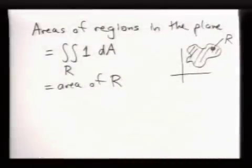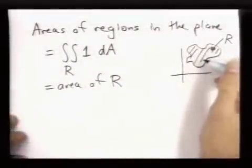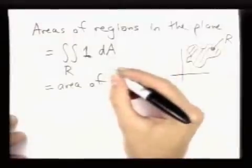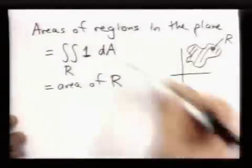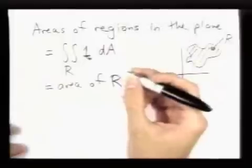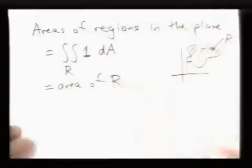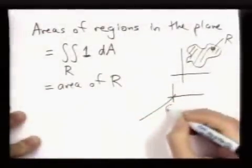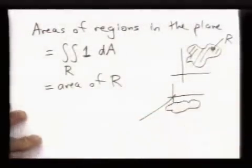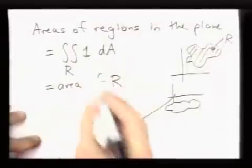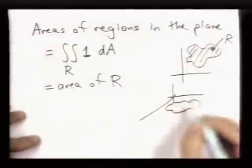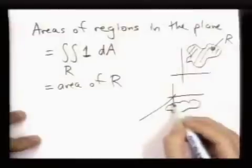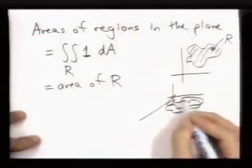But the reason this makes sense, there are a couple ways to explain it. One, you could think of this as the volume under the function constantly equal to 1 over the region R. So that would look something like, you know, I have this strange shape on the xy plane. The function 1 over this region is just the function that's always equal to z equals 1. It looks like this.